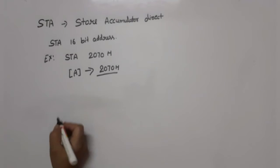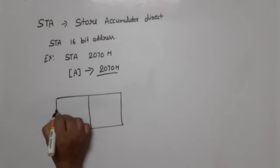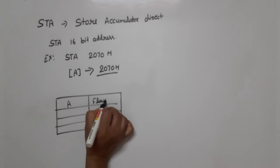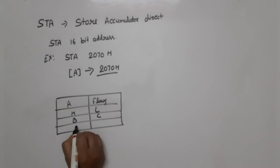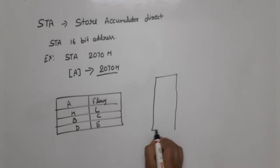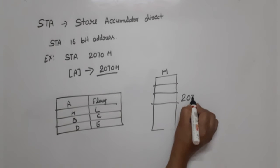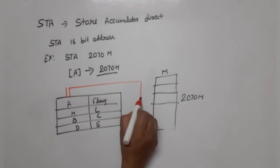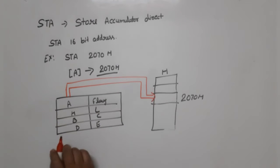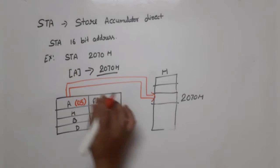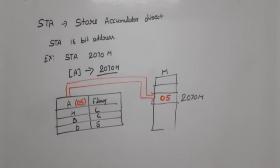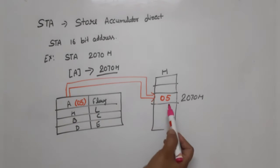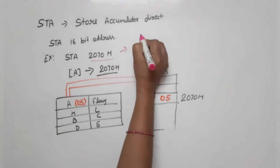Let's see how this performs. In the microprocessor we have registers: accumulator, flag register, and others like HL, BC, DE. We also have memory. Suppose this memory location is 2070H. According to the instruction, the content of the accumulator should go to this address. Whatever data is in the accumulator — for example, 05 — will be stored at memory location 2070H. This is direct addressing mode because data goes directly from the accumulator to the specified location.